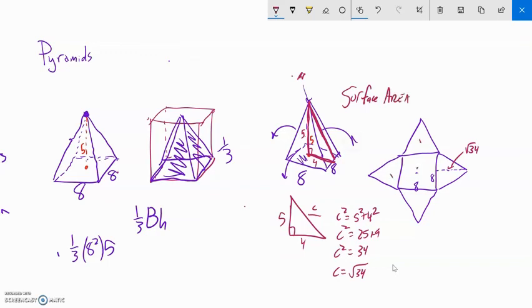Because I just add up all the pieces. Notice that right here I have an 8 by 8, so that's 64. And then I have four of these triangles, so I have 64 plus four of whatever those triangles are. Area of a triangle, my base is 8 and my height is √34, is one-half base times height. And then I could plug that into my calculator and that would give me my surface area.